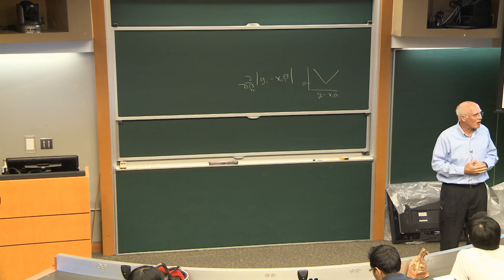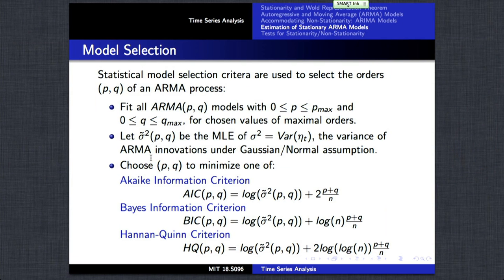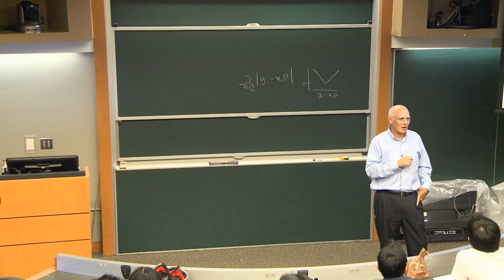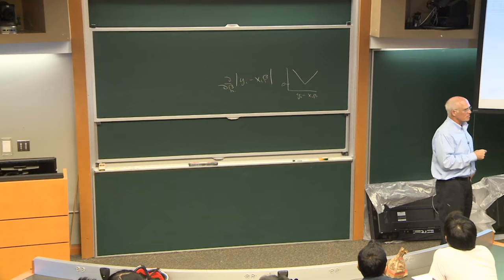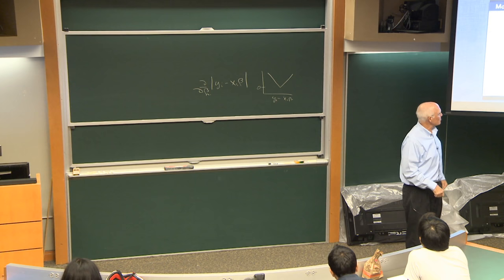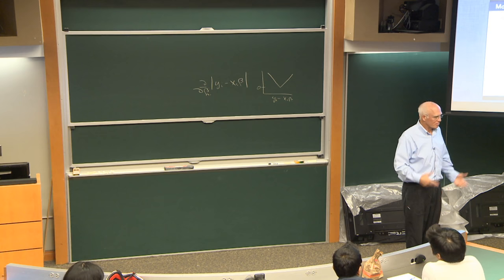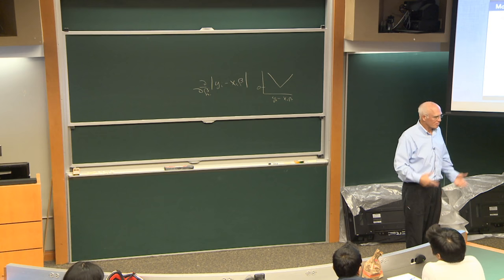Model selection involves information criteria: measures of how effectively a fitted model performs that we want to minimize. These are functions of the log likelihood plus a penalty for the number of parameters estimated. The Akaike information criterion, the Bayes information criterion, and the Hannan-Quinn criterion are different ways of judging model quality. The BIC corresponds to assuming a finite number of true variables in the model; the Hannan-Quinn criterion assumes potentially infinite variables but requires identifiability. Think about what penalty is appropriate for adding an extra parameter — we'll go through that next time.